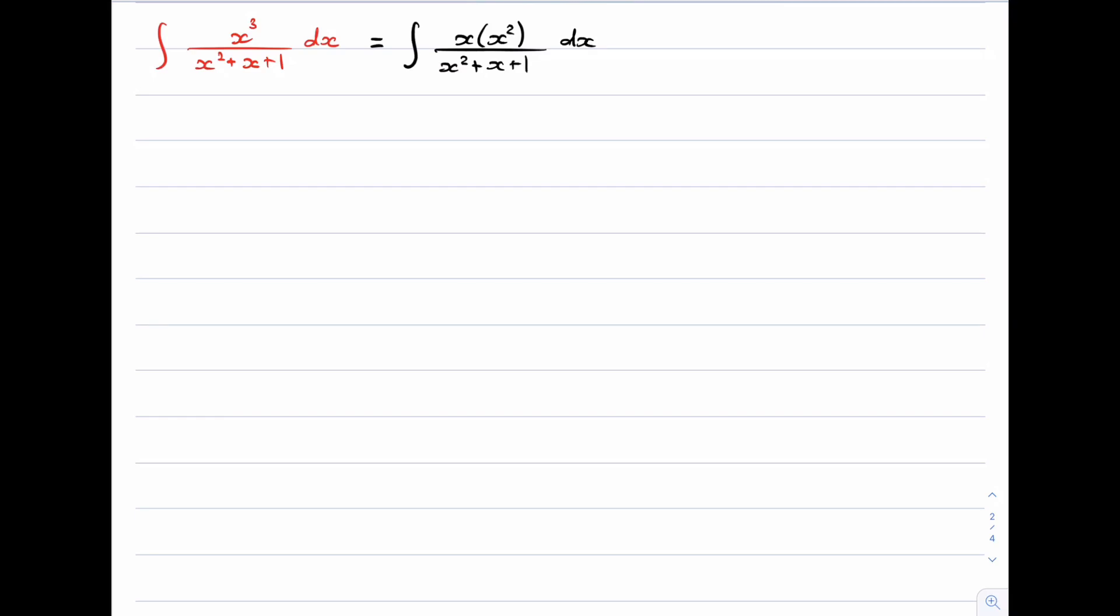Now the reason for doing this is because at this point we're really going to force the numerator to include the denominator. So that x squared, we're going to write it in a particular way. I'm going to put square brackets for a moment. The x squared is going to be written as x squared plus x plus 1. So now I've really just forced the numerator to include the denominator. But of course I can't do that for nothing. I need to subtract what I added. So I added x plus 1, so I need to subtract that as well.